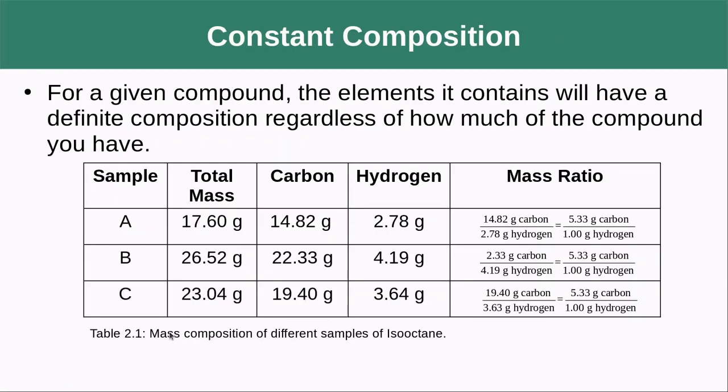Constant composition. We can actually put a little bit of math to that. If we look at our example here, we took the exact same compound, isooctane, and we had different masses for three different samples. When we test for the amount of carbon and hydrogen contained in it, we wind up getting differing amounts of carbon and differing amounts of hydrogen. But the ratio of carbon to hydrogen, if I divide the amount of carbon by the amount of hydrogen, is always the same. There's always 5.33 grams of carbon for every one gram of hydrogen. So they have a constant composition.